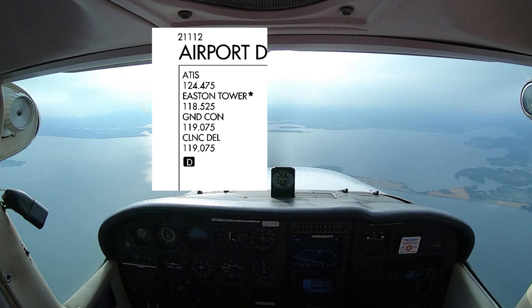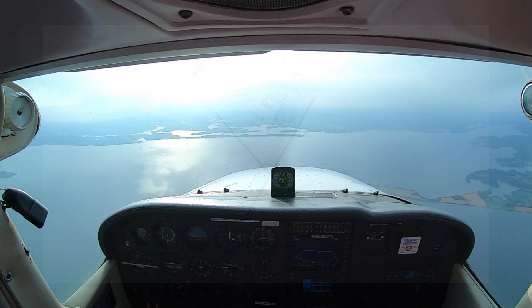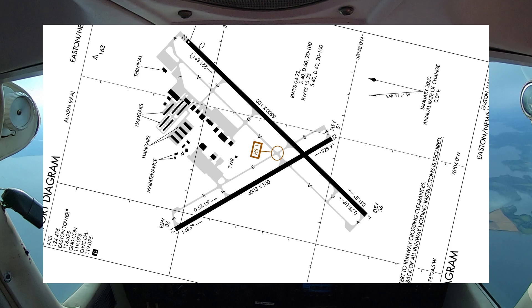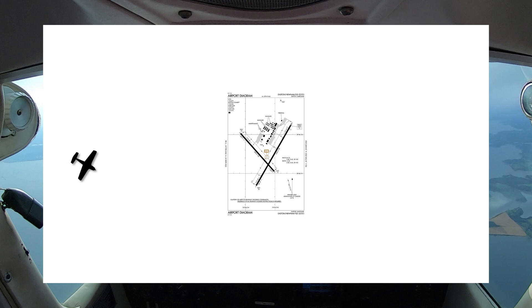Let's brief our entry. The winds are favoring runway 4 — it's the big runway, and the ATIS is set for arrivals to expect runway 4. Coming from the west like we are, we can take the taxiway diagram and turn it so the airport orientation is the same as it will be from our point of view. This makes it easy to visualize a left base entry for runway 4, so that's what we'll expect.